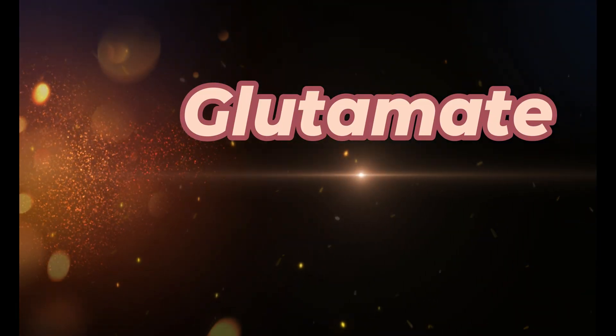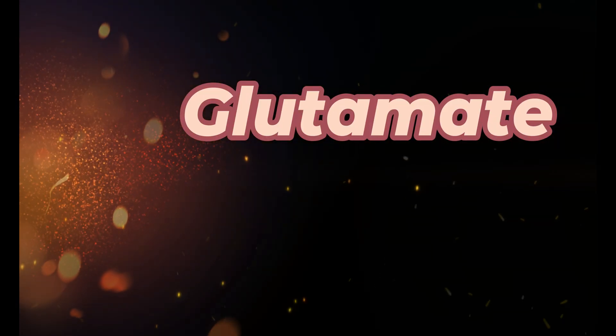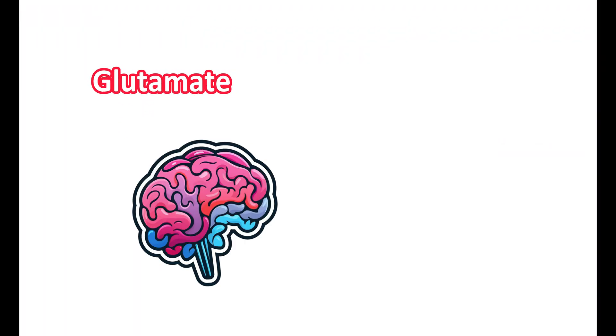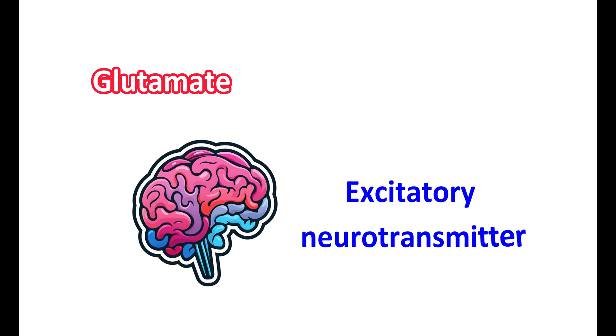Today we discuss glutamate and its receptors. Glutamate is one of the important neurotransmitters in the CNS and it is widely distributed in the brain, where it is uniformly distributed and found in higher concentrations compared with other tissues. It acts as an excitatory neurotransmitter and it has few metabolic roles that significantly affect various functions of the body.